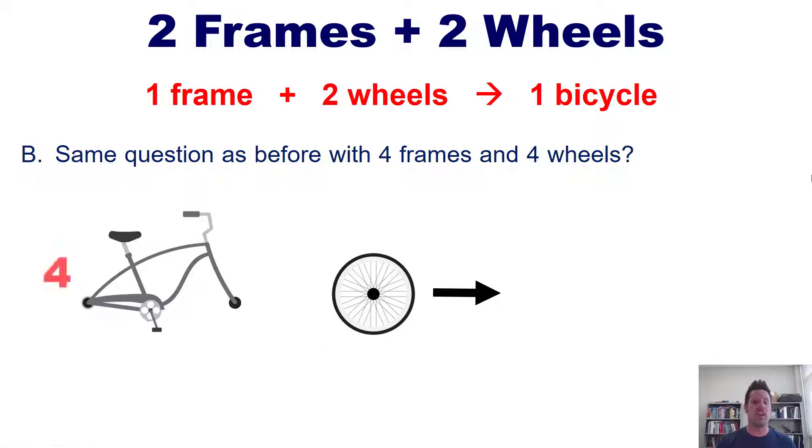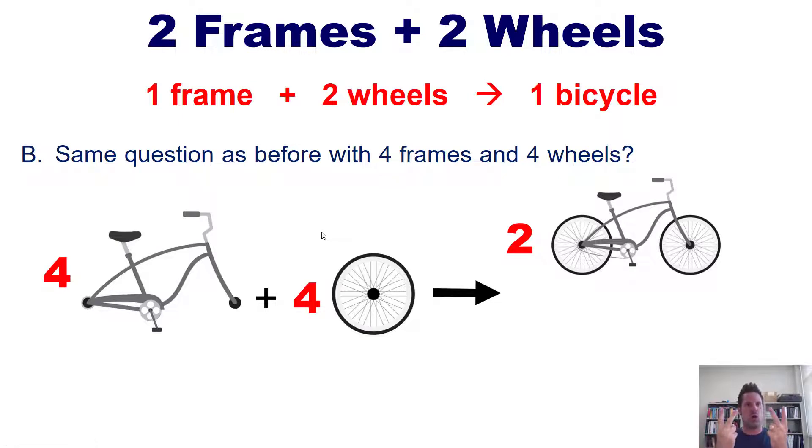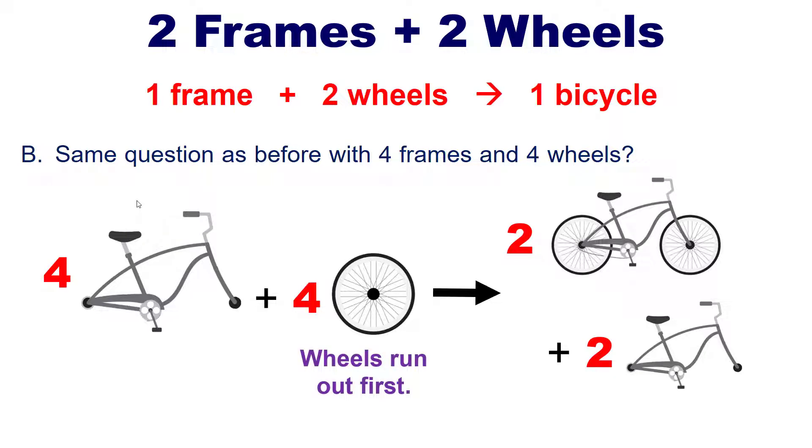Now to the next example. What if you had four frames and four wheels? Well, similar to the previous example, if you have four wheels, you can make two bicycles because each bicycle requires two total wheels. But once you're done making those two bicycles in the process consuming or using up two of your frames, you cannot make any more because you're all out of wheels. So you end up with two extra frames left over that cannot be turned into bikes because you have no more wheels. In other words, your wheels run out first and are therefore your limiting reactant. You have two leftover frames, therefore your frames in this scenario are your excess reagent.